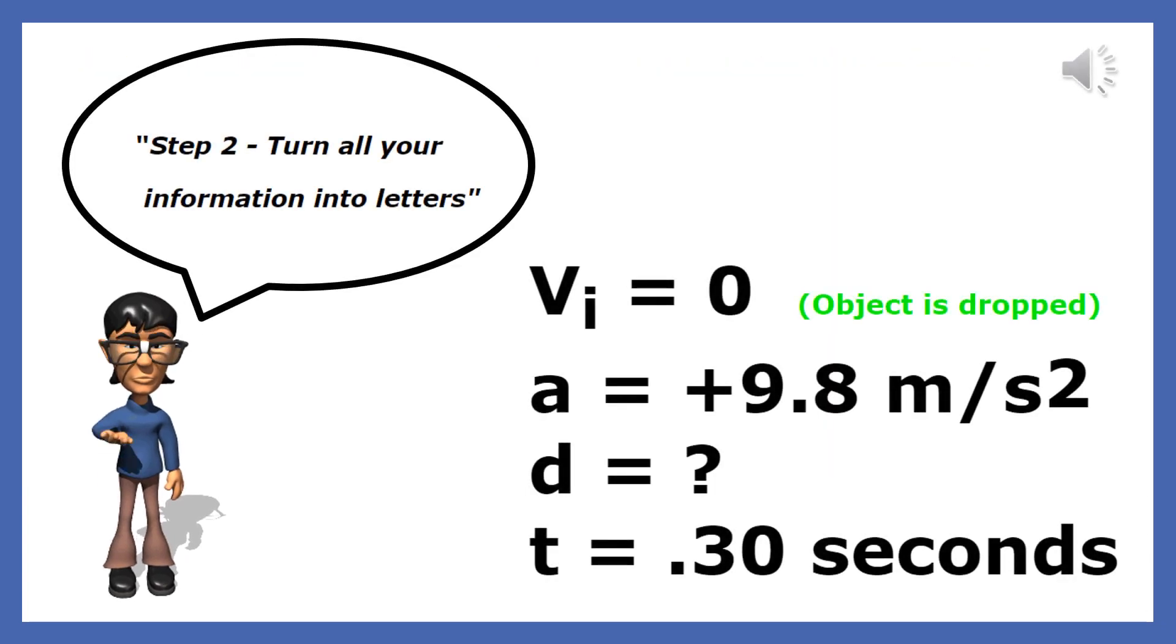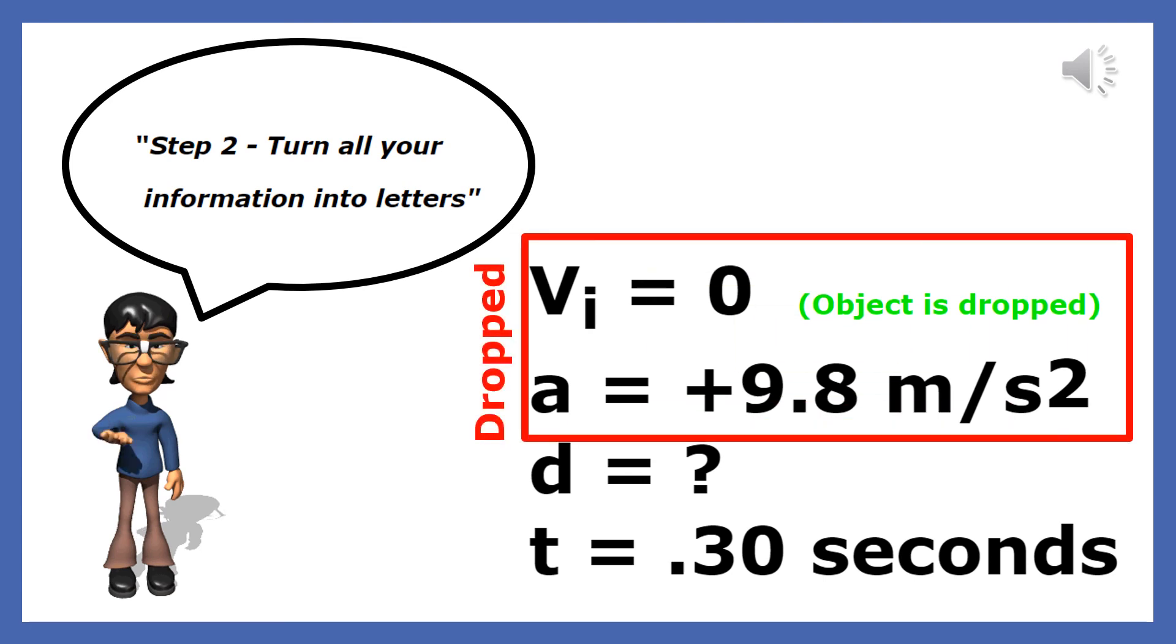Step 2 is to turn all your information into variables. Since the object is dropped, the initial velocity is 0, and the acceleration is positive 9.8 meters per second squared. We are looking for the displacement, so we write D equals question mark, and we were told that the time is .30 seconds.